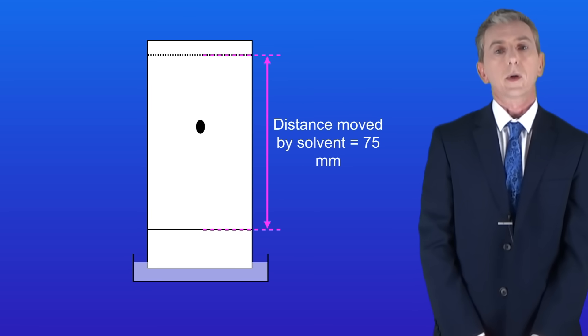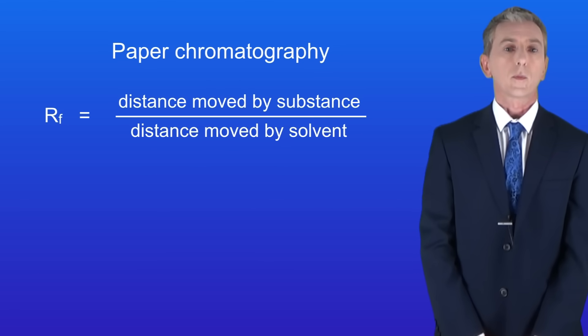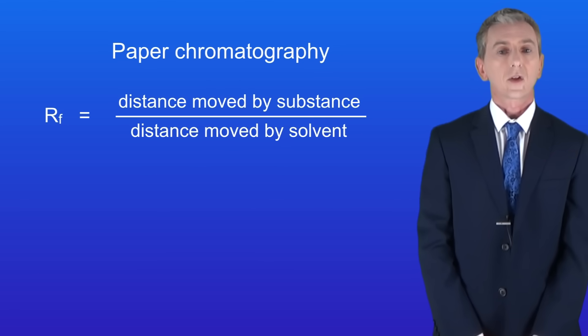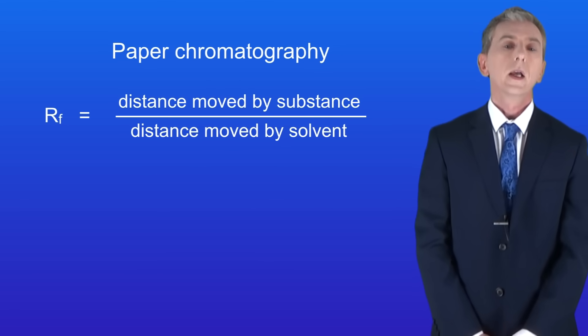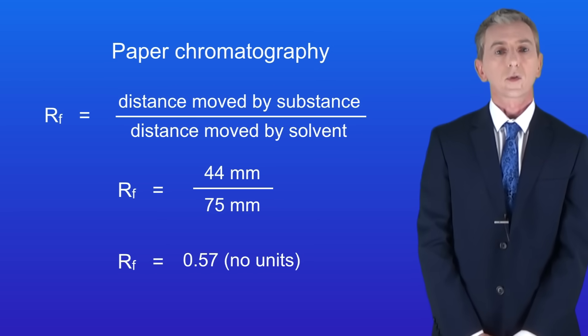We now use these numbers to calculate the RF value for the substance. We divide the distance moved by the substance by the distance moved by the solvent, like this. So this gives us an RF value of 0.57 for this substance. Notice that RF values do not have a unit.